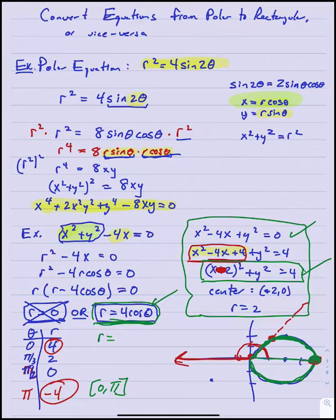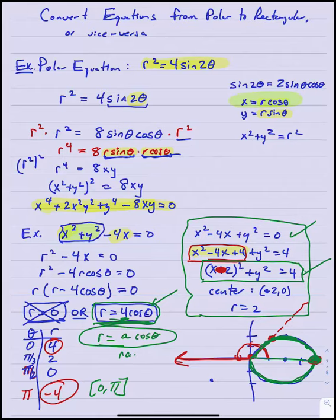In general, an equation of the form r equals a constant times cosine theta is a circle tangent to the y-axis on the right side, with a radius equal to half the constant. This is one of the basic polar equations listed in your textbook.